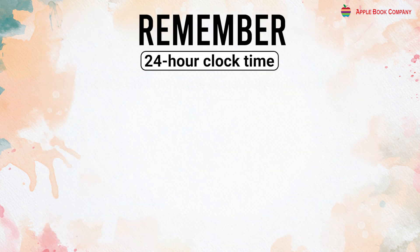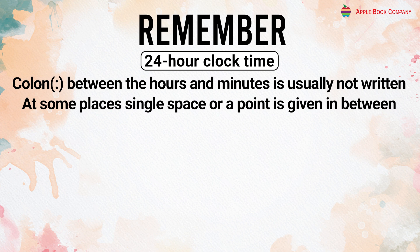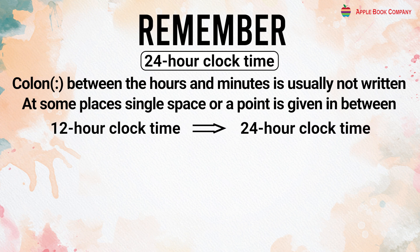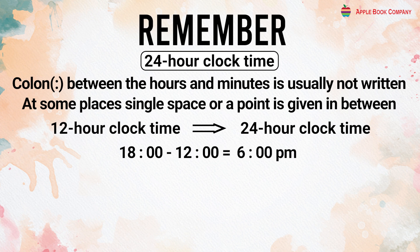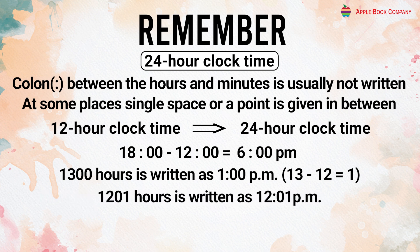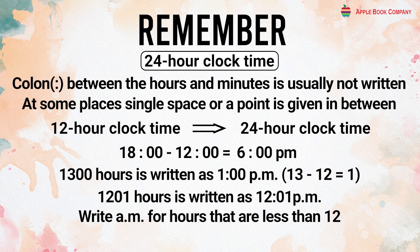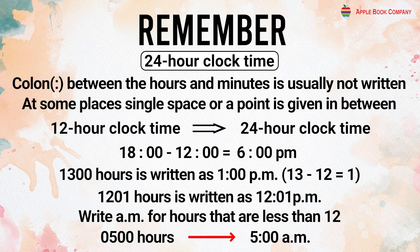Remember, in 24-hour clock time, the colon between the hours and minutes is usually not written. At some places, a single space or a point is given in between. To convert 24-hour clock time into 12-hour clock time, subtract 12 from hours greater than 12 and write PM. For example, 1300 hours = 1 PM (13 − 12 = 1). Also, 1201 hours = 12:01 PM. For hours less than 12, just write AM — for example, 0500 hours = 5 AM.